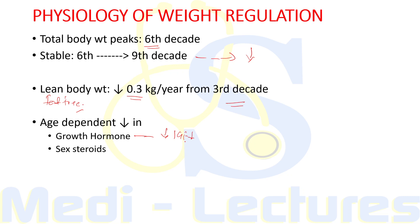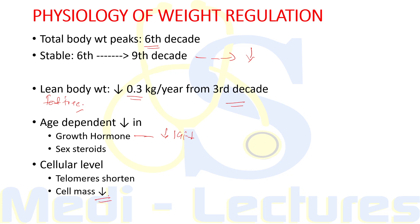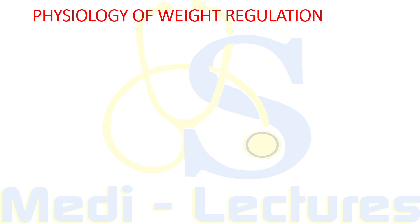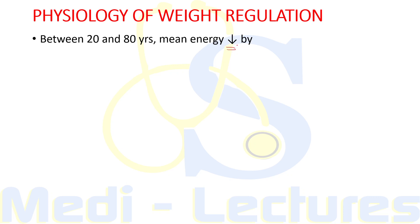Age-dependent changes also occur at the cellular level — telomeres are shortened and body cell mass, which is the fat-free portion of cells, also decreases. Between 20 and 80 years of age, mean energy intake or requirement in men decreases by 1200 kilocalories per day and in women by 800 kilocalories per day.